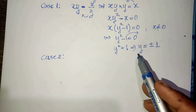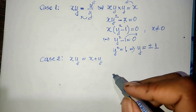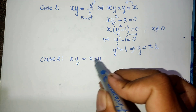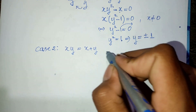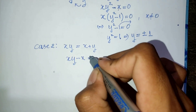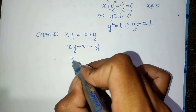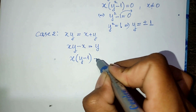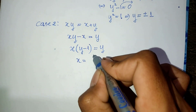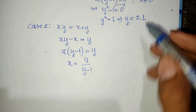Now we use case two: x multiplied by y equals x plus y. So x·y equals x plus y. Taking x from the right-hand side to the left-hand side, we get x·y minus x equals y. Then factoring x out, we get x multiplied by (y minus one) equals y, so h equals y divided by (y minus one).